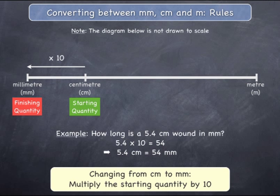And if you are changing a quantity from centimetres to millimetres, you must multiply the starting quantity by ten to get an equivalent quantity in millimetres, as shown.